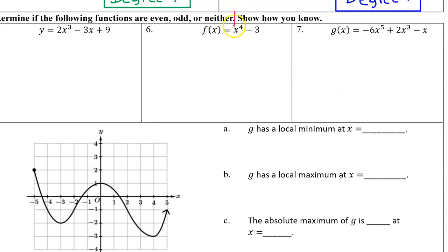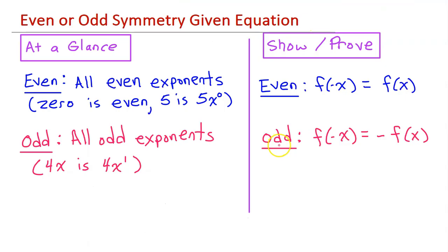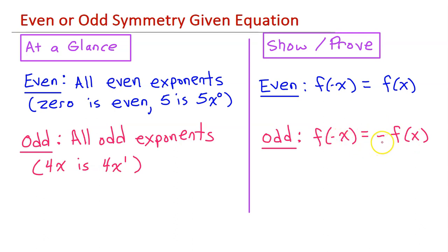However, if they ask you to show or prove that a function is even, odd, or neither, we have to do more than just look at the exponents. A function will be even if f of negative x is equal to f of x — if we plug in negative x for all the x's and get the original function back, then it's even. A function will be odd if f of negative x is equal to the opposite of f of x — if we plug in negative x and get the opposite function, then it's odd.